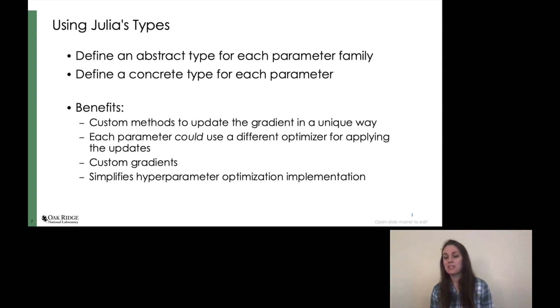Obviously, we could do this in Zygote without defining a type and just using a function, but we lose the previous benefit. And as I'll discuss later, this also simplified the implementation of the hyperparameter optimization method we chose to use.